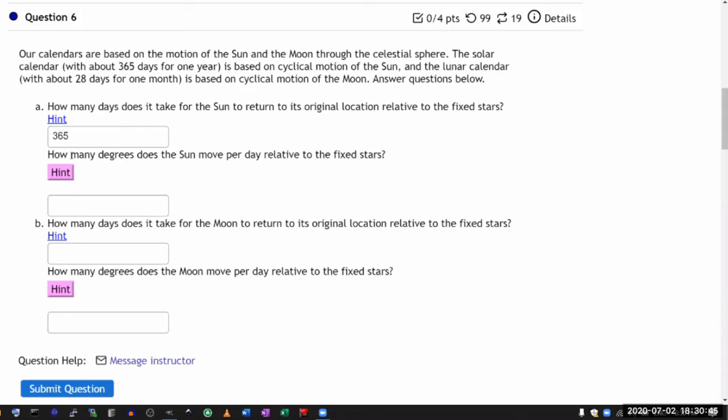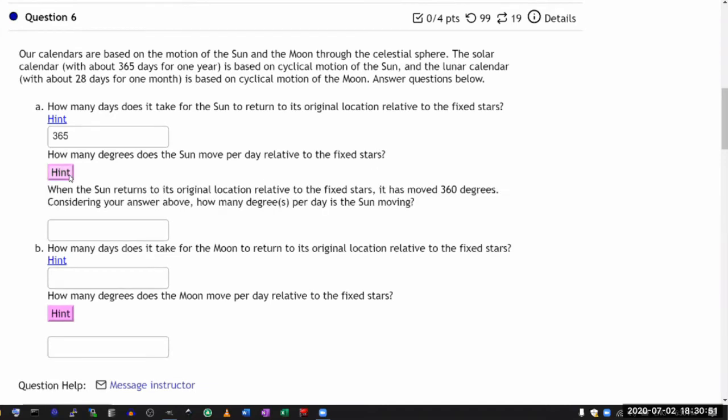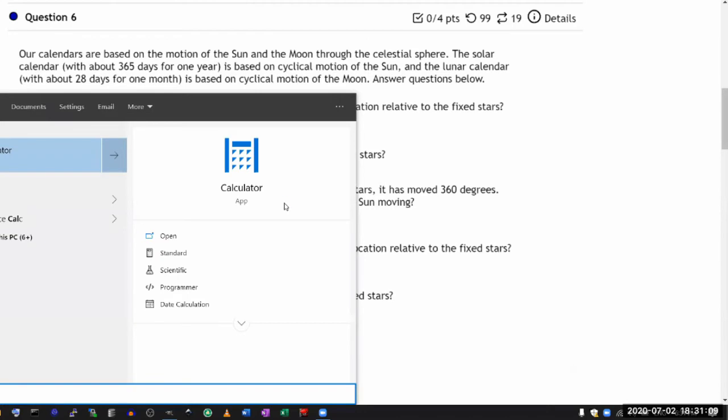Then it asks, how many degrees does the sun move per day relative to the fixed stars? Well, the hint kind of asks you or it gives you a hint that when it returns, it has moved one full circle. And the way we define angles is that 360 degrees. So this is the calculation that you are going through. Let me bring up a calculator here.